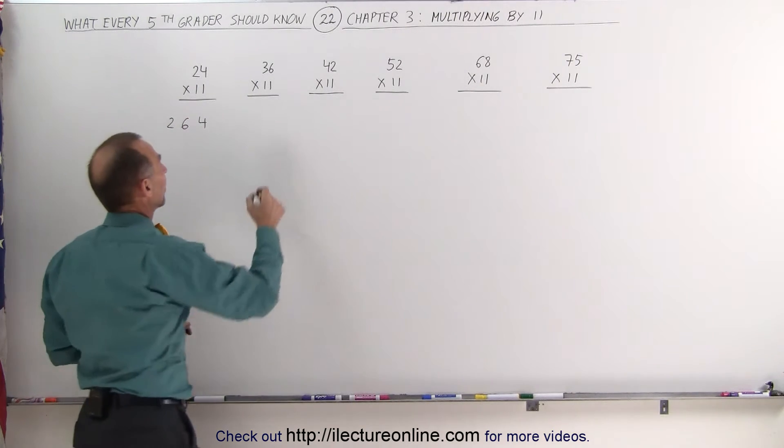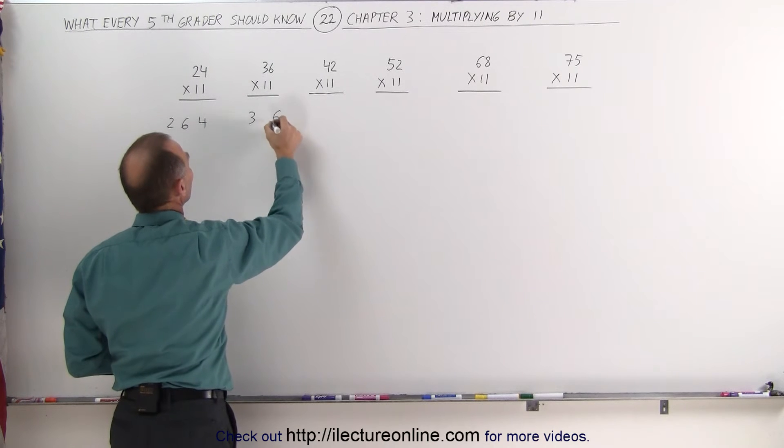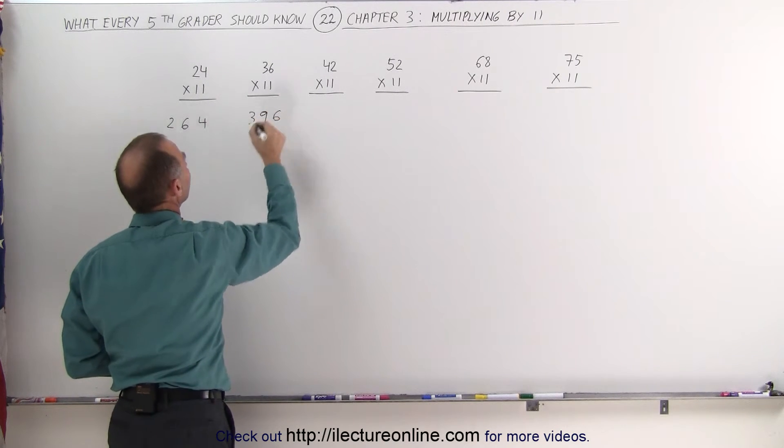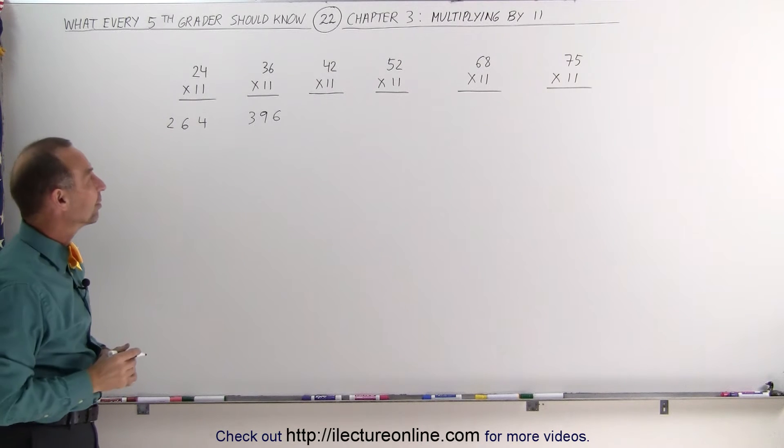Try with 36. Again, you separate the two numbers, 3 and 6, add them together, that gives you 9. 11 times 36 is 396.